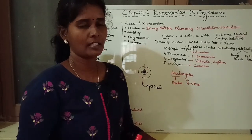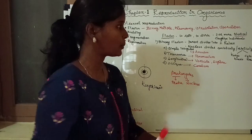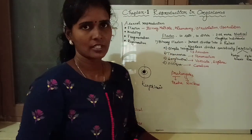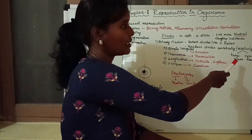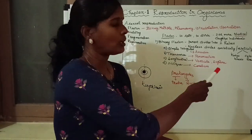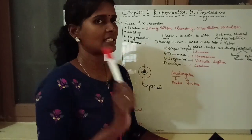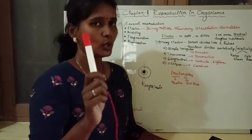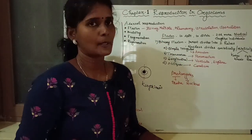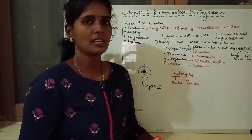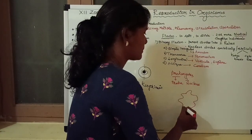In prokaryotic organisms, the nuclear material is in the cytoplasm — there is no proper nuclear membrane. In prokaryotic organisms, amitotic division usually occurs. In eukaryotic or basic level unicellular organisms, mitotic division also occurs. Mitosis involves karyokinesis — nuclear division — followed by cytokinesis, cytoplasmic division. One parent cell divides into two cells. In binary fission, one parent divides into two individuals.